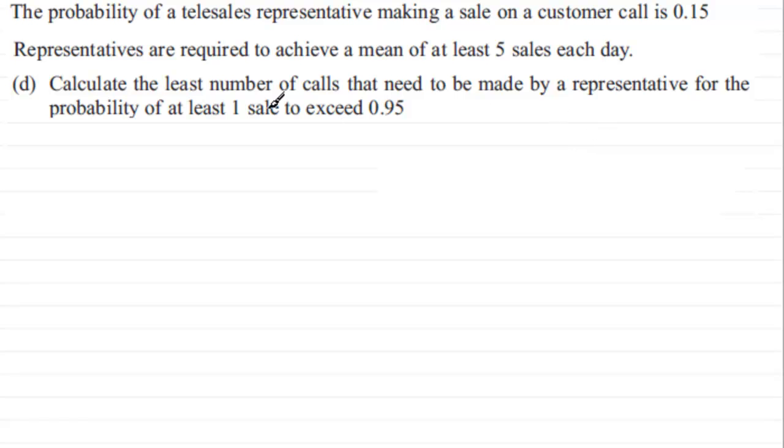Now to do this, we already know that this follows a binomial distribution. If we define a random variable, let X be the random variable number of sales made, where X follows a binomial model, n trials, probability of success is 0.15.